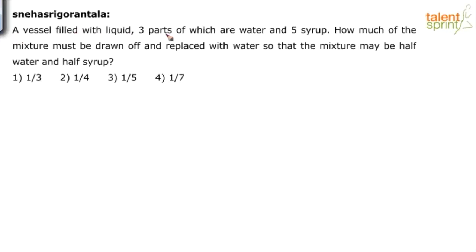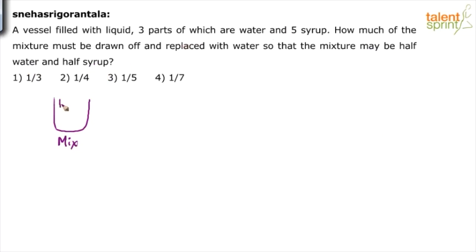A vessel is filled with liquid, three parts of which are water and five parts are syrup. How much of the mixture must be drawn off and replaced with water so that the mixture may be half water and half syrup? So basically, initially we have some mixture which has got water and syrup — the ratio of water to syrup is three to five.